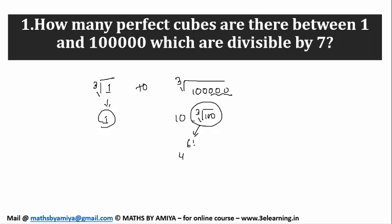That is 4 cube is 64, 5 cube is 125. So if we find 3rd root of 100, that is 4-something. The gap between that is 61 and here is 36.